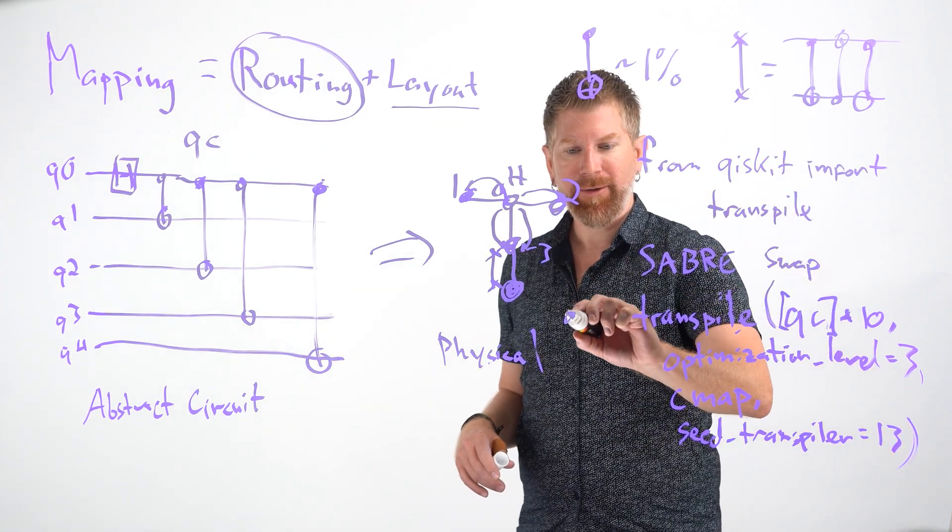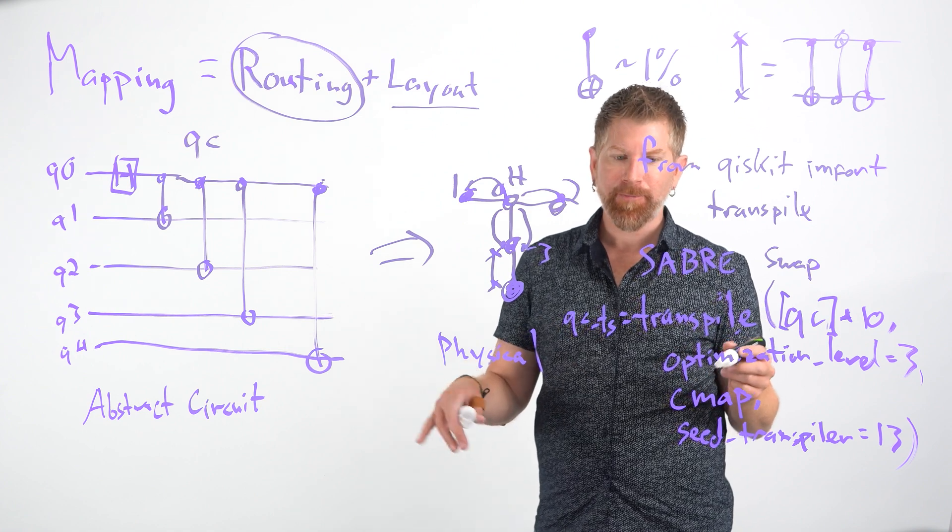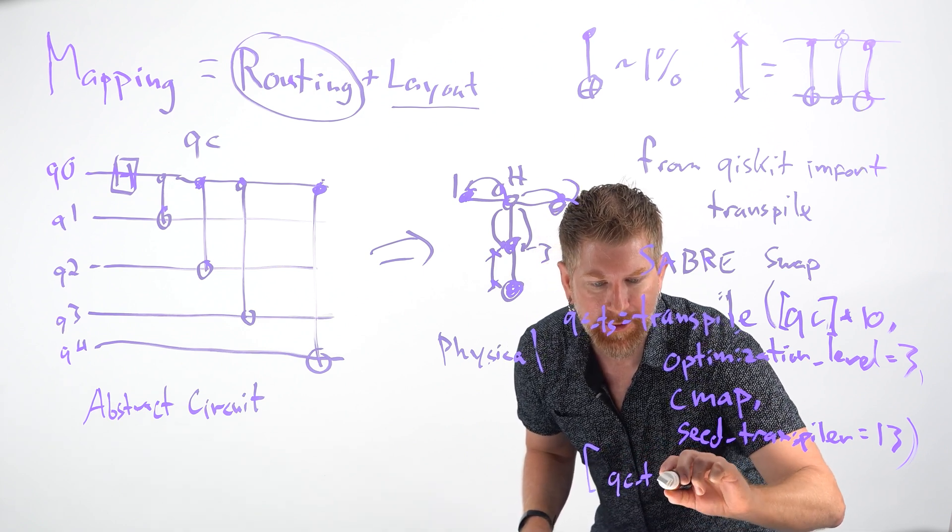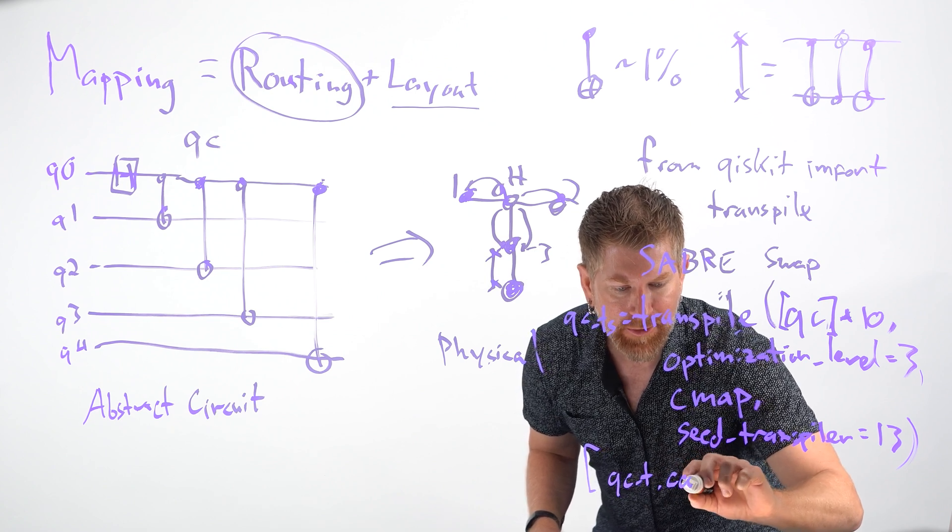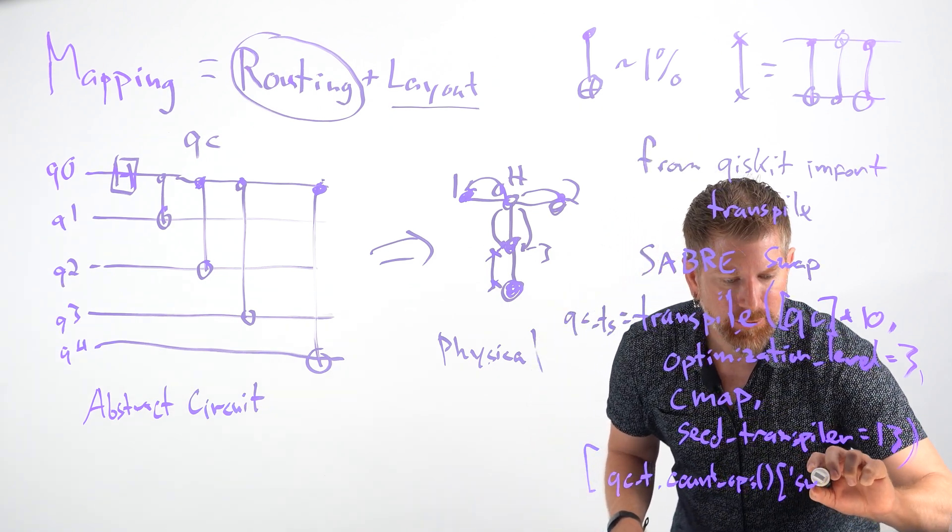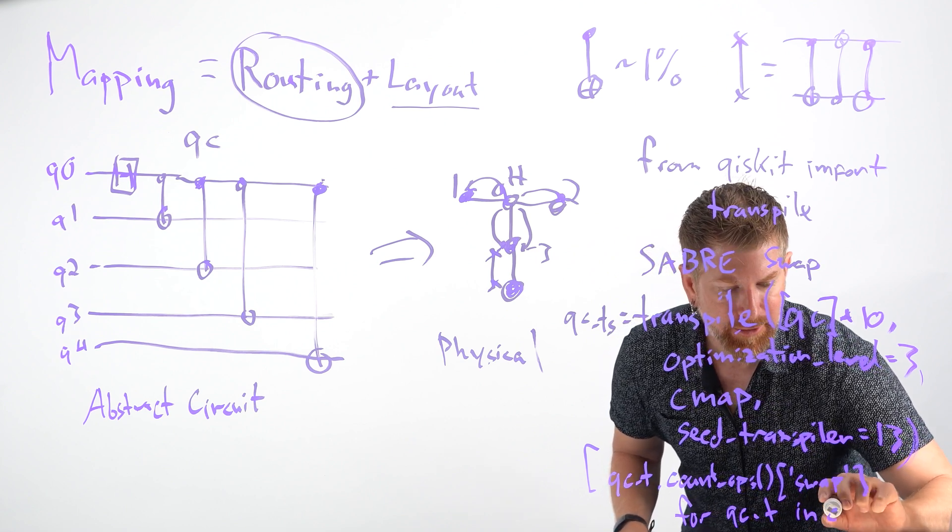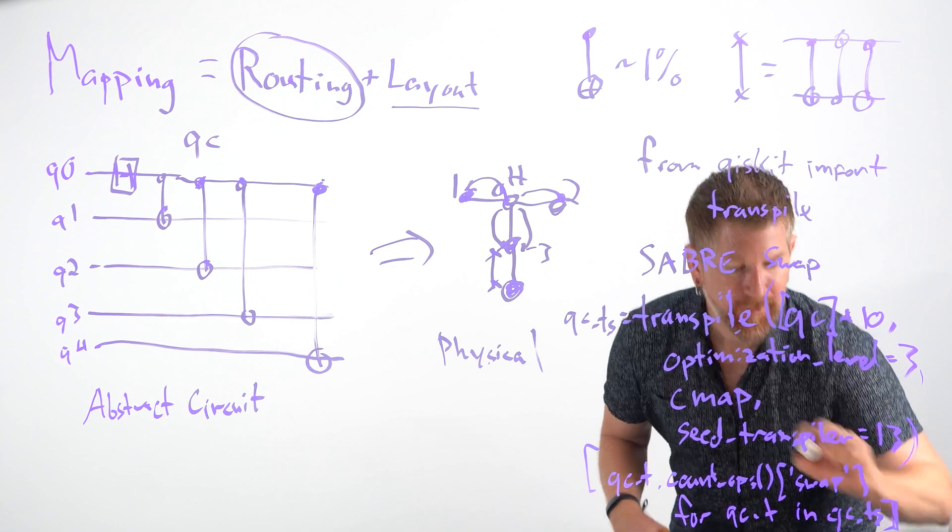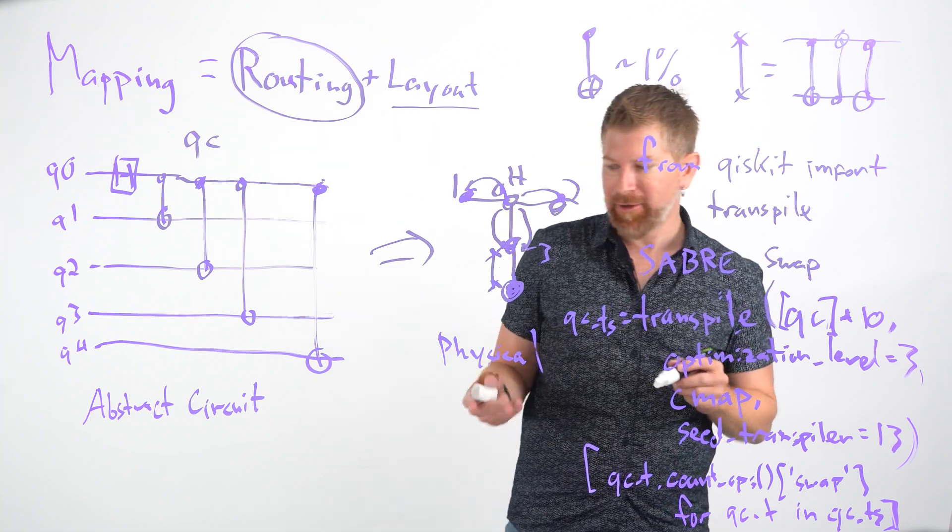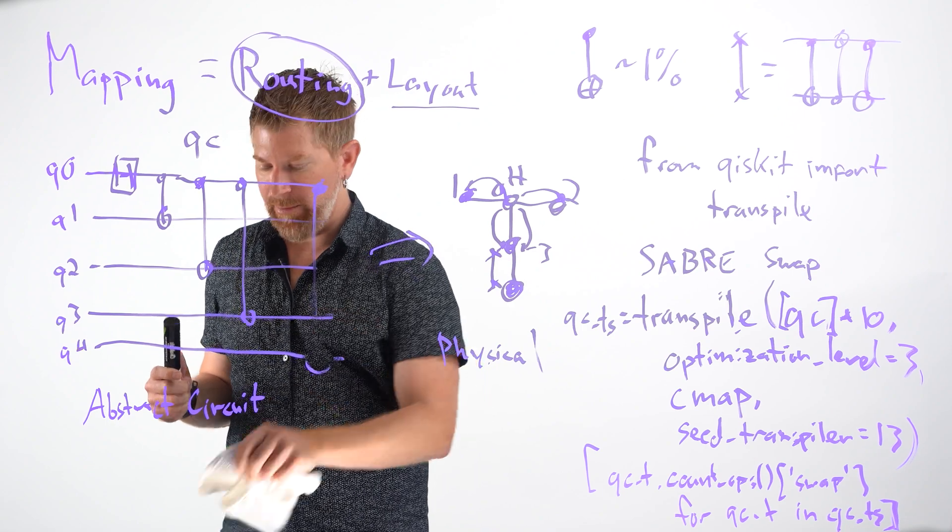Okay, so this will give us a list of transpiled circuits. And then we can look at the ones that have the actual least number of swaps. And we can do that by looking at the counts. So you can get those counts by looking at qct.countops, which is a method. And we just care about the swap at this point. And then we do that for each circuit in the transpiled circuits. Or at least that's how I like to do it. Once we count these swaps, we can choose the one with the best layout. And it turns out to be that this is a simple enough problem, that it's very easy to kind of insert the swap and get a minimum swap of one. But you can't do better than that for this circuit.